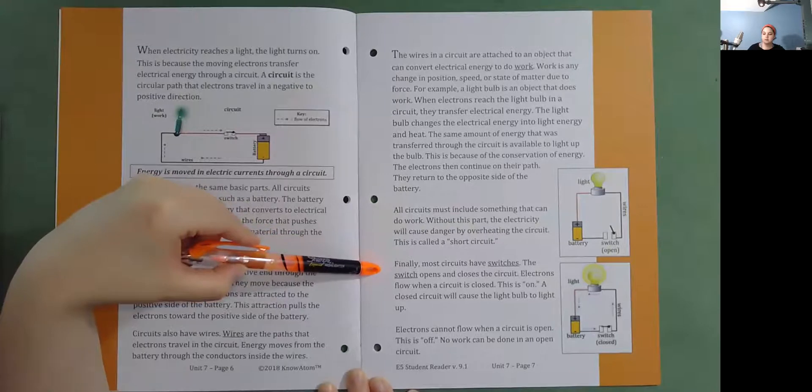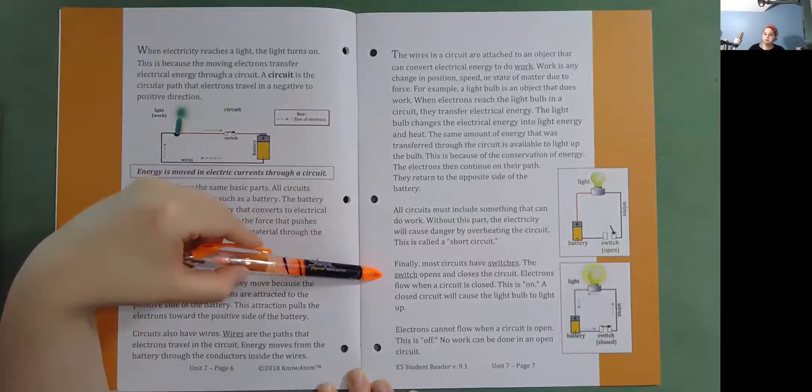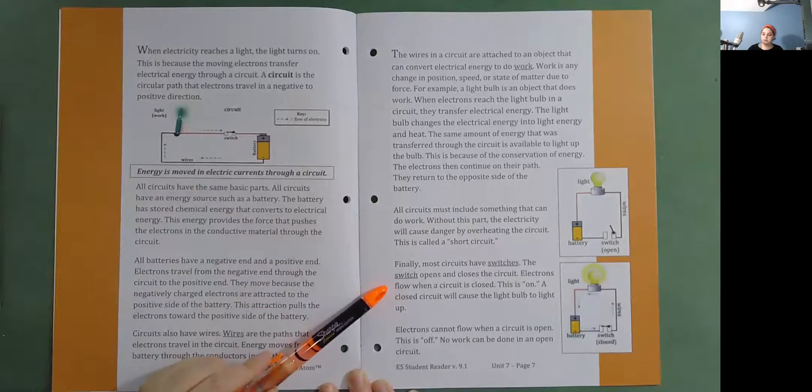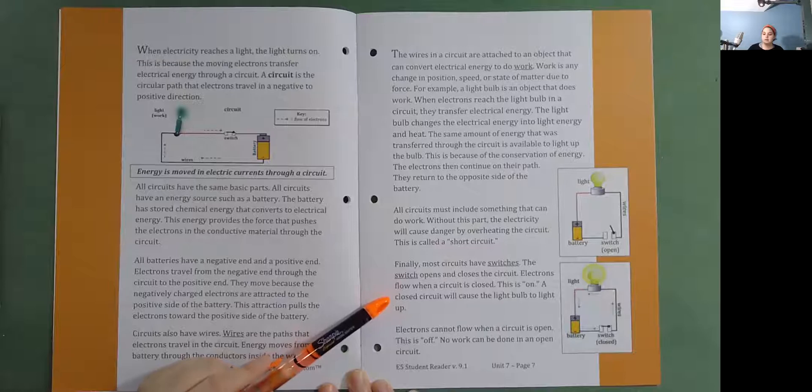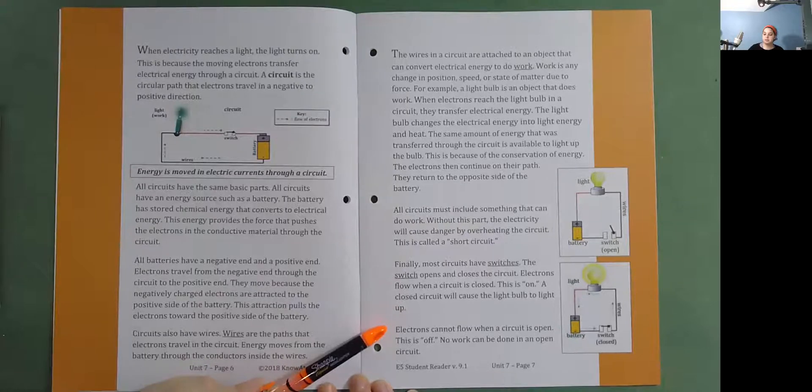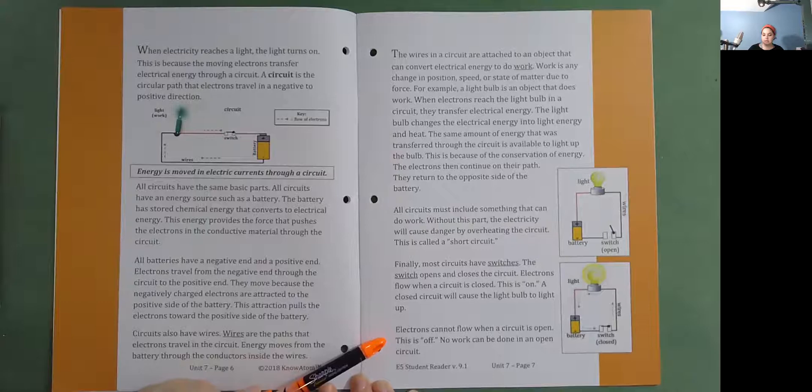Finally, most circuits have switches. The switch opens and closes the circuit. Electrons flow when a circuit is closed. This is on. A closed circuit will cause the light bulb to light up. Electrons cannot flow when a circuit is open. This is off. No work can be done in an open circuit.